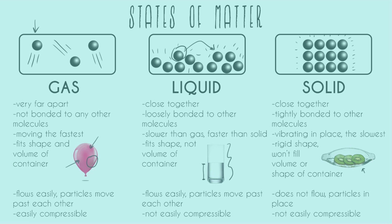Gases are easily compressible. With just the force a human can apply, you can make a volume of gas smaller than it was. The best example is a syringe: if you plug the hole of an air-filled syringe and press down with your thumb, you can compress that gas and make it take up less space. This is because there's so much space between individual gas molecules. All these properties stack on top of each other — because gas molecules are far apart and not bonded, you can compress them.